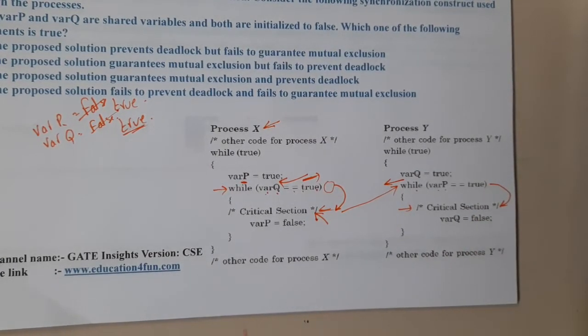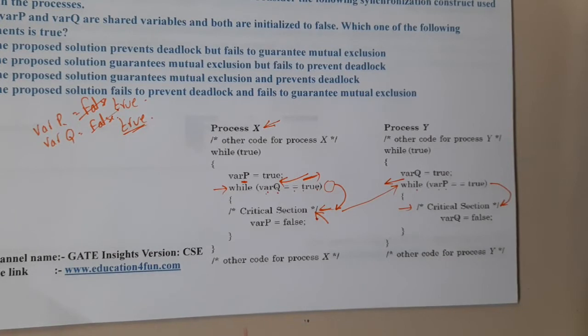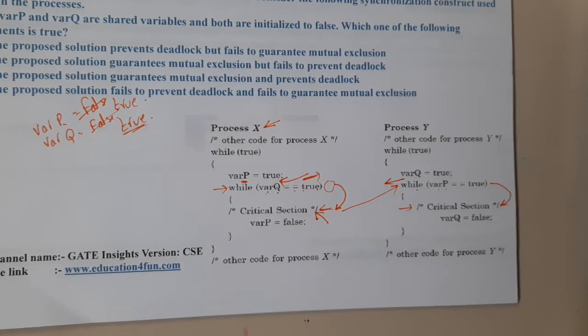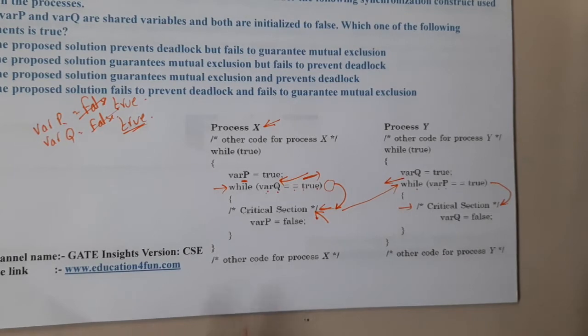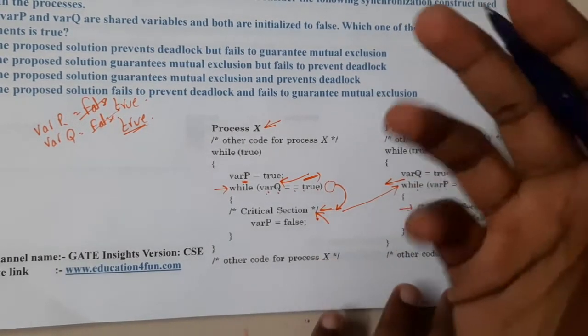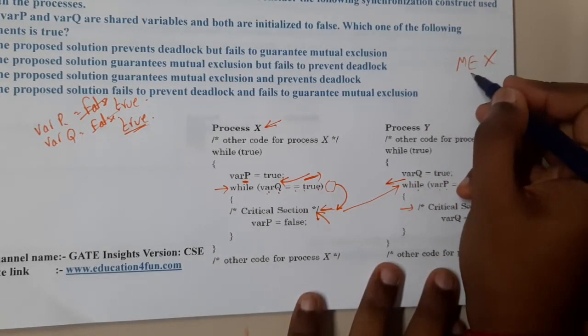Oh my god, this is a huge blunder which is being done by this code. Basically, inside critical section, process X and process Y are at the same time. Hence mutual exclusion has failed here. Mutual exclusion has failed.